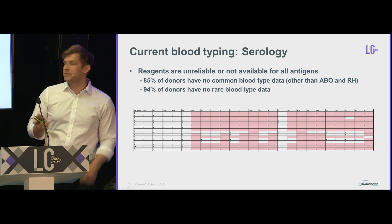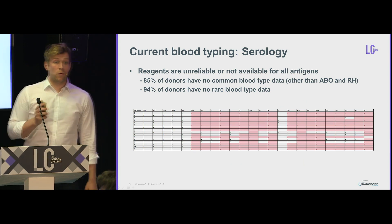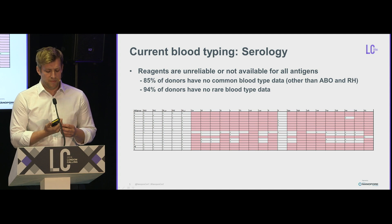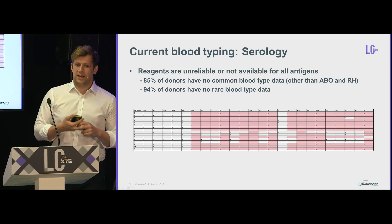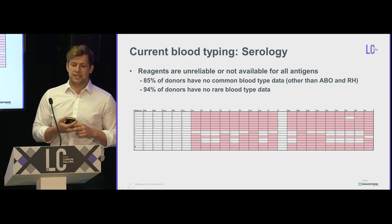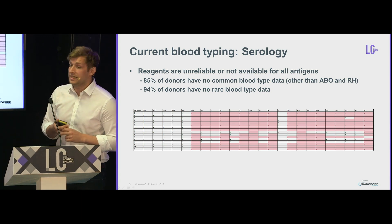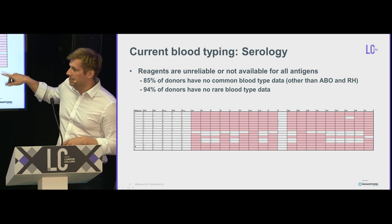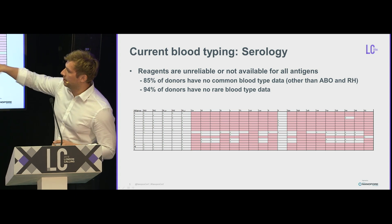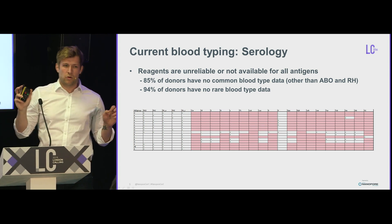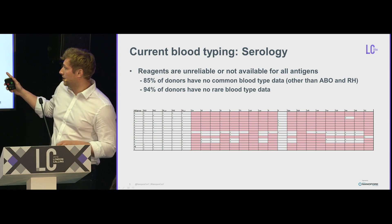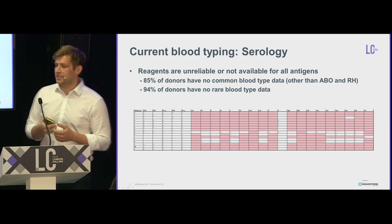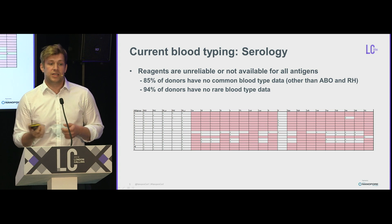But there are some limitations. Reagents are not available for all blood groups, and there's no high-throughput testing method for some of the extended phenotyping. This has led to about 85% of donors in any given blood service not having typing data for their common blood groups, and 94% of donors not having any rare typing at all. Looking at a random 20 donors from my data, you can see the red gaps — no result for these donors. People call it 'Swiss cheese data,' and this leads to significant problems in providing matched units for difficult patients.